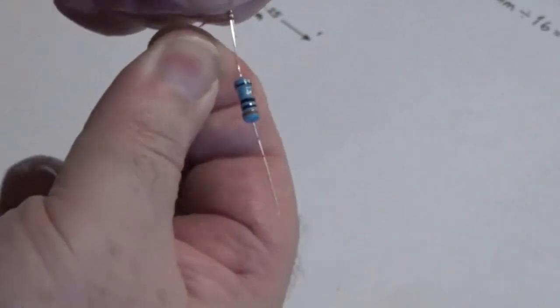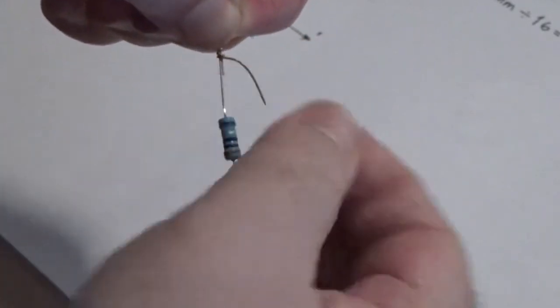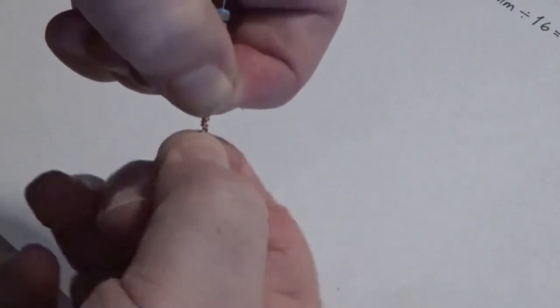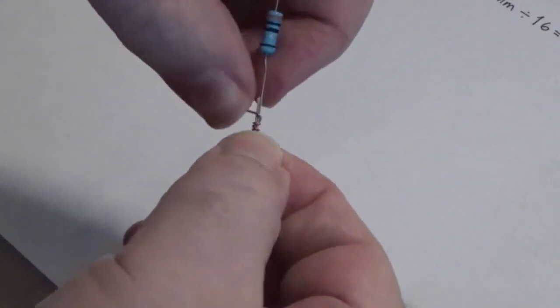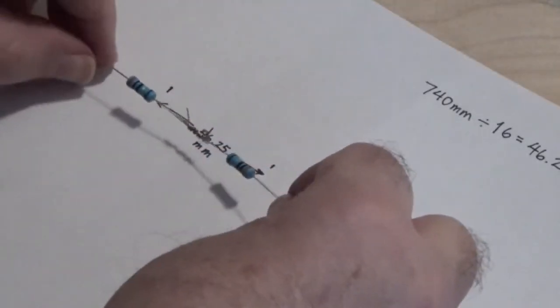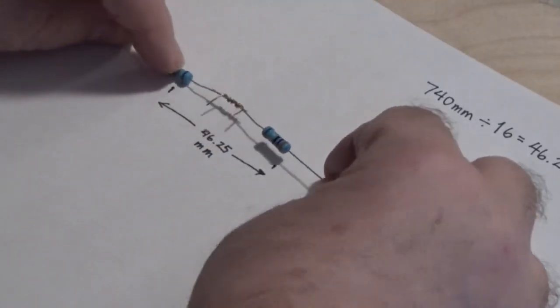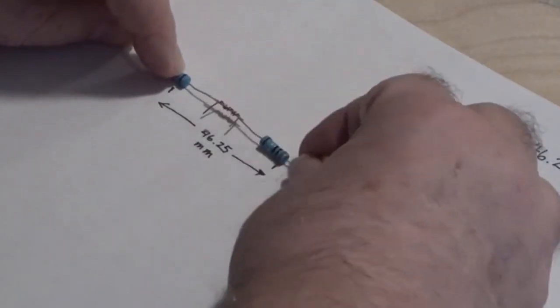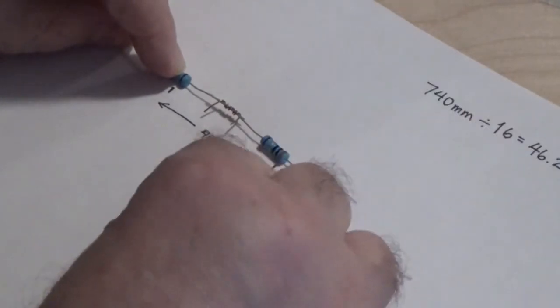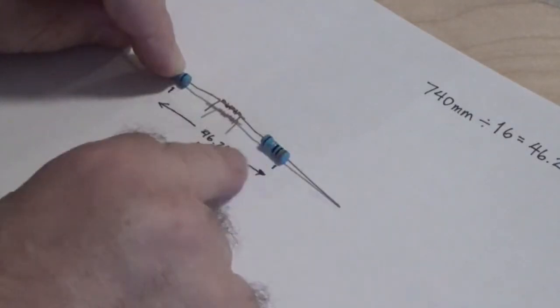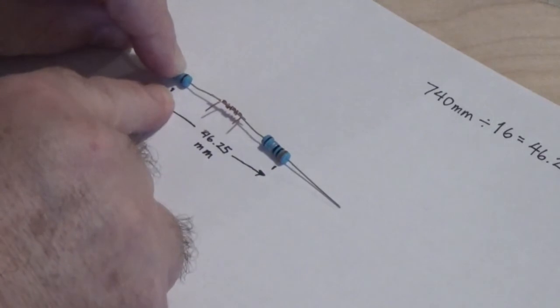Wrap the bare wire you prepared earlier fairly tightly around the leads of the resistors to connect them in a series. This will give you a good mechanical connection between the resistors and allow you to slide them to the correct spacing. Measure the spacing using the marks you made on the paper. Line up the color bands on your resistors, making sure to use the bands that are on the same ends.